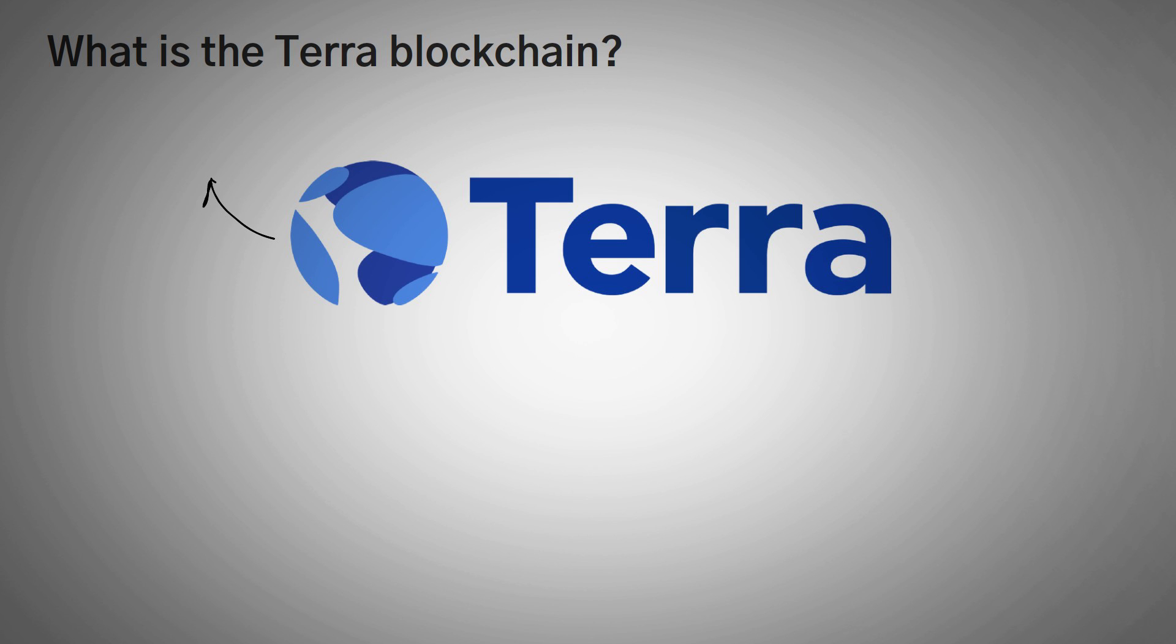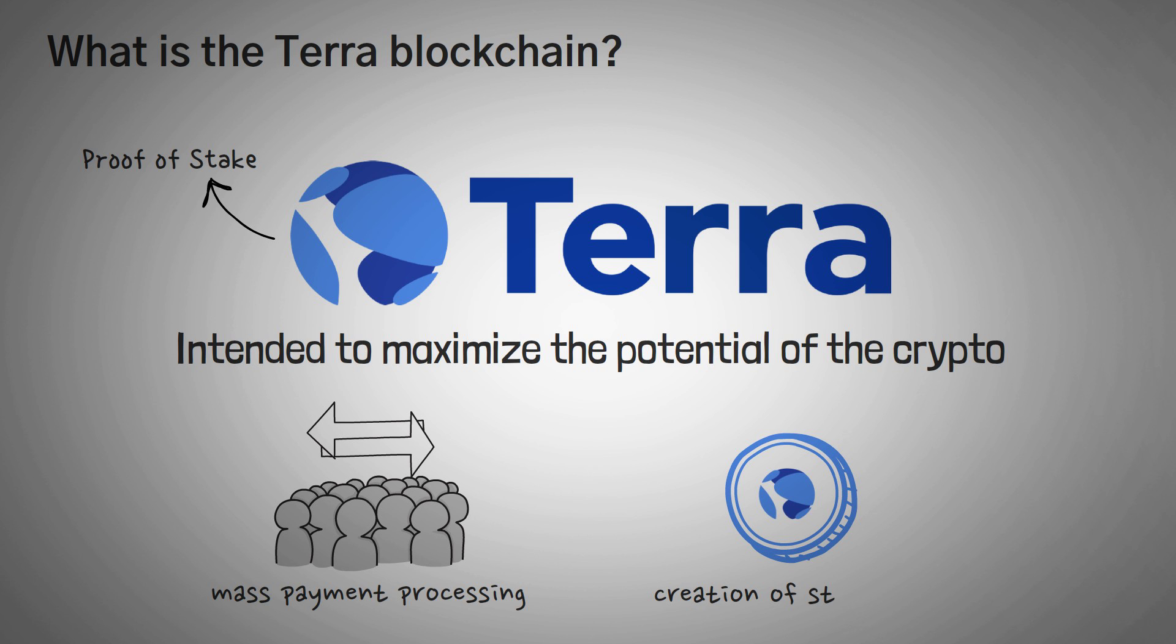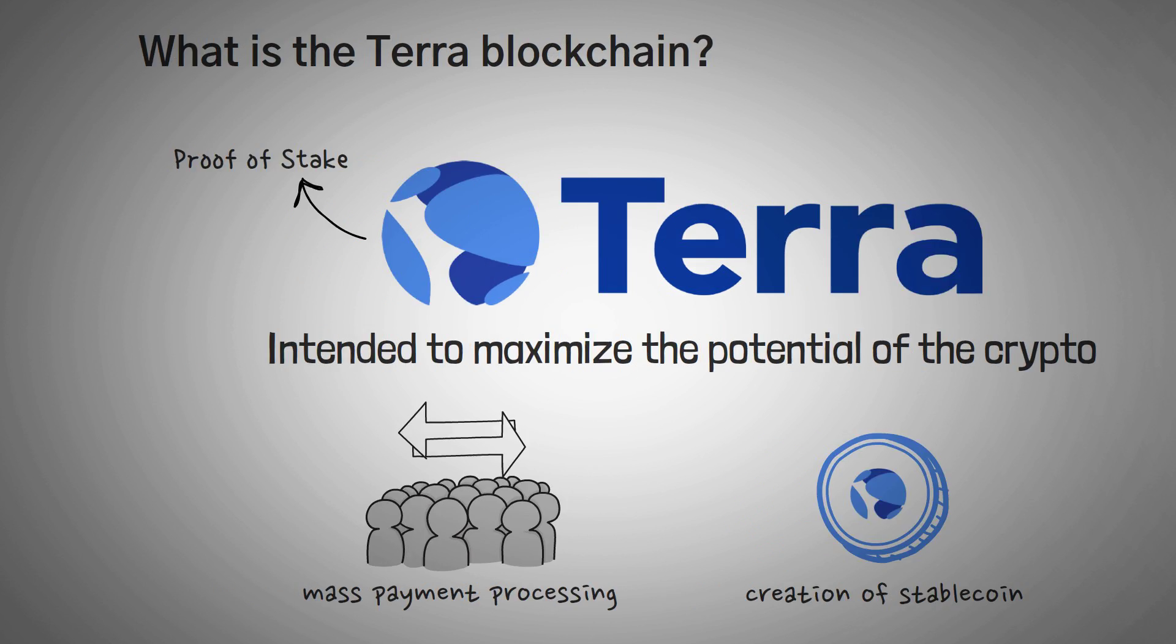So what actually is the Terra blockchain? In simple crypto terms, Terra is a proof of stake blockchain intended to maximize the potential advantages of crypto for the financial world, focusing on both a mass payment processing system as well as a creation of a useful stablecoin. Let me explain the payment processing side really quick and then we'll get onto the cool part, the algorithmic stablecoin.